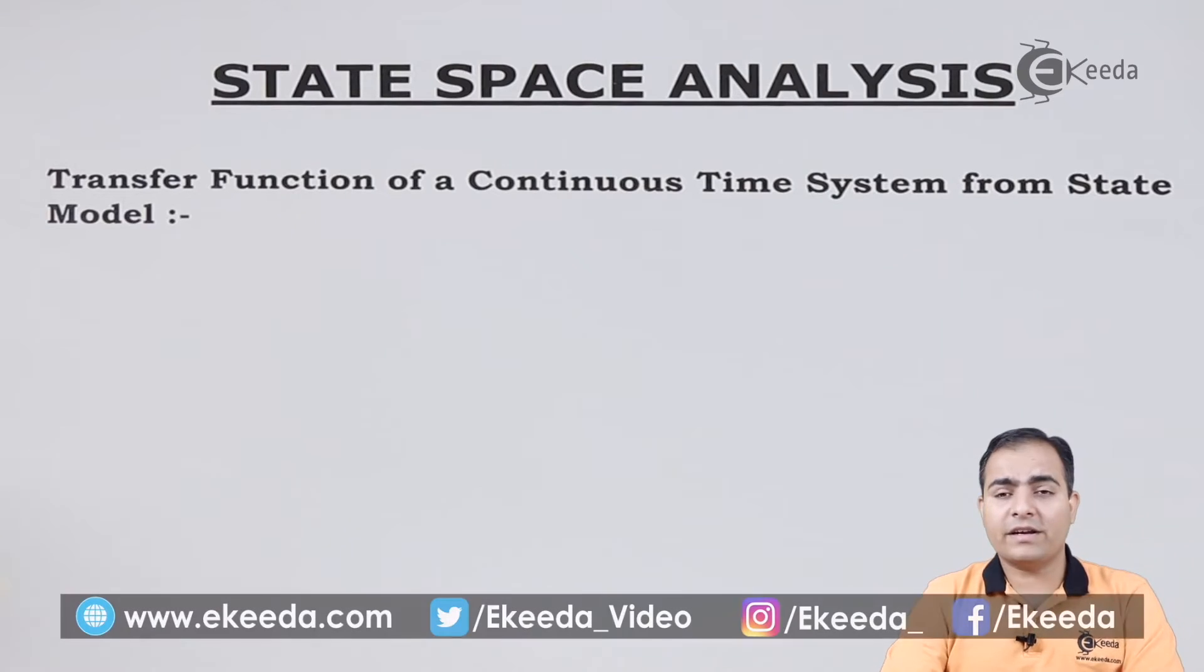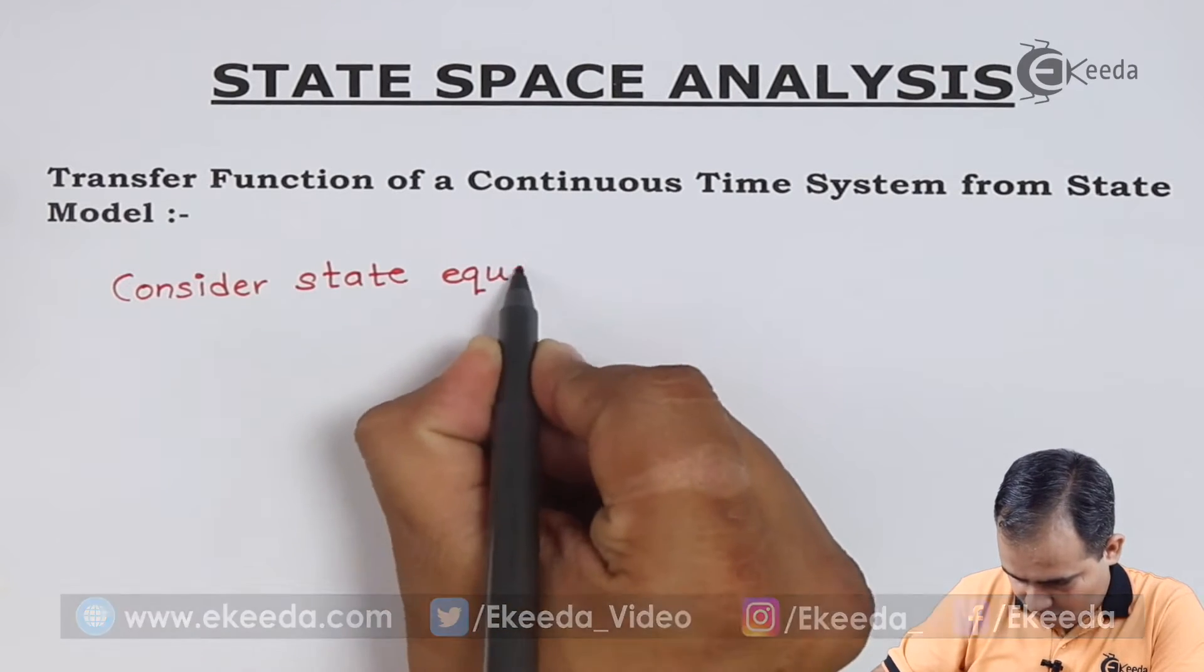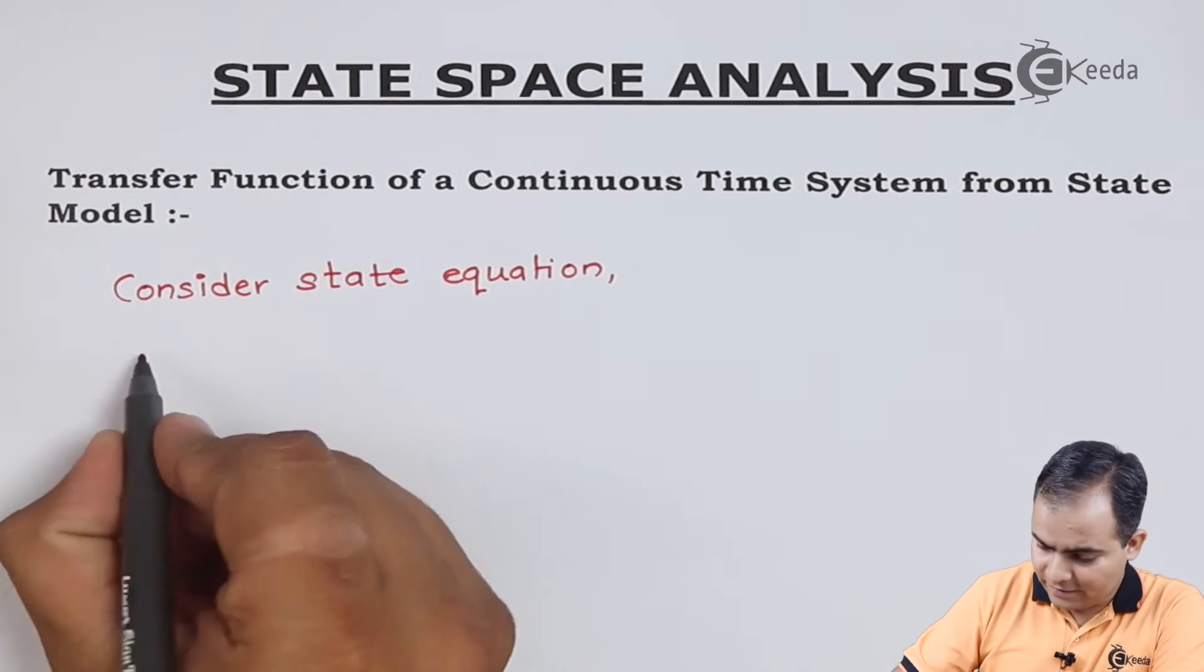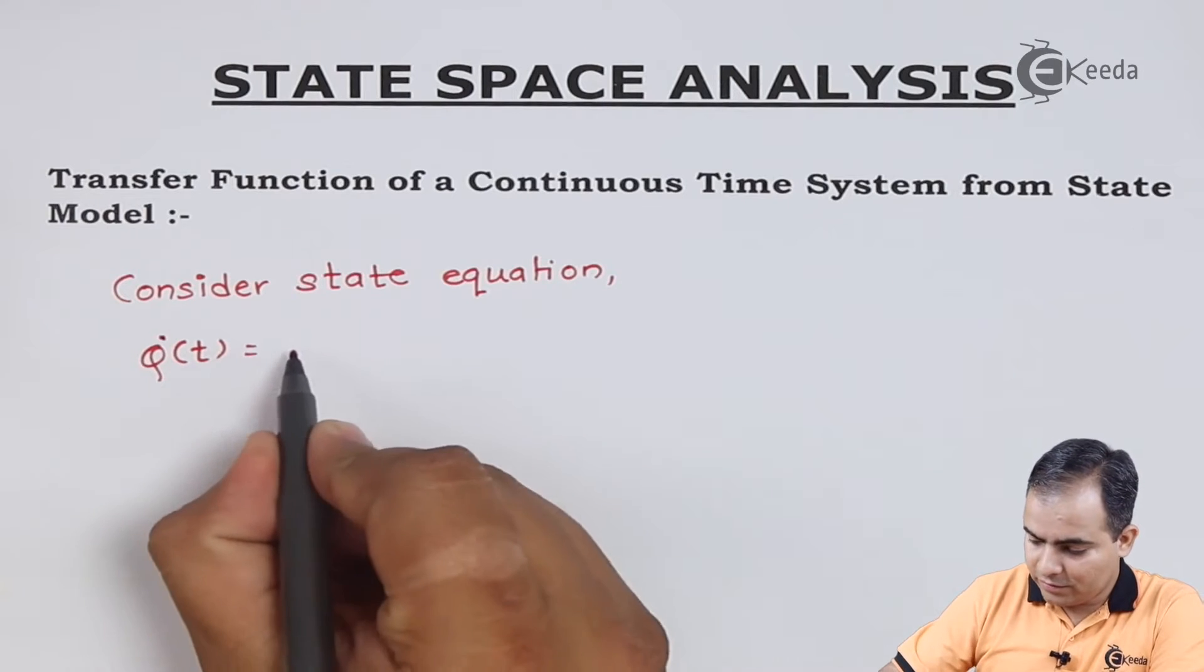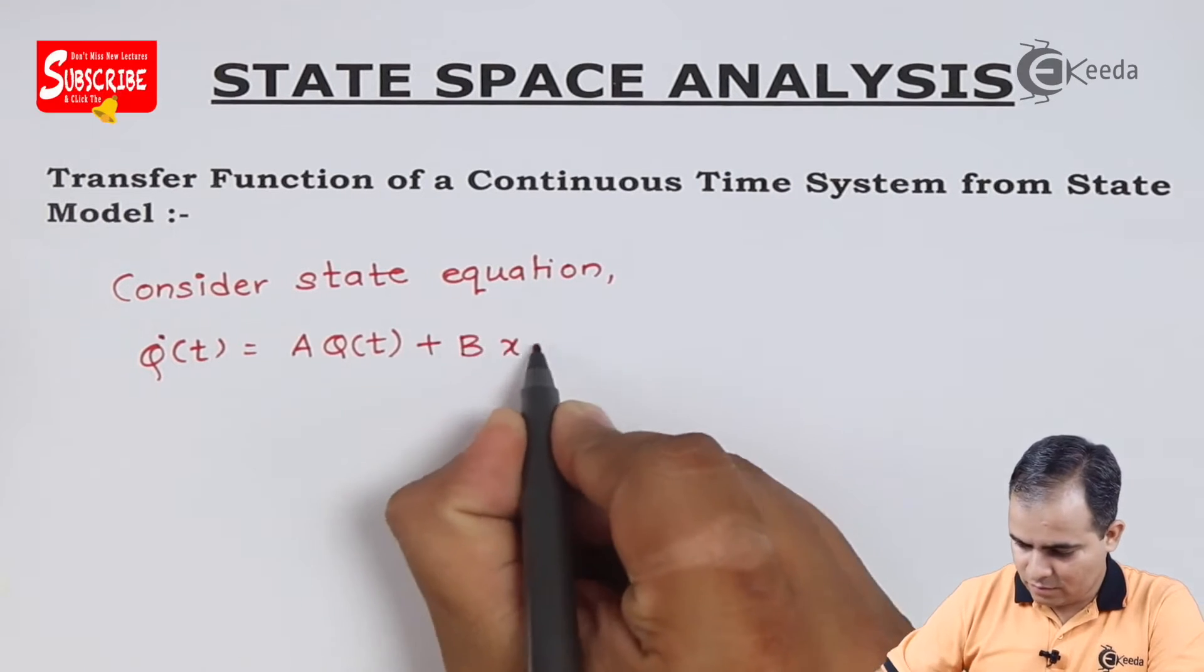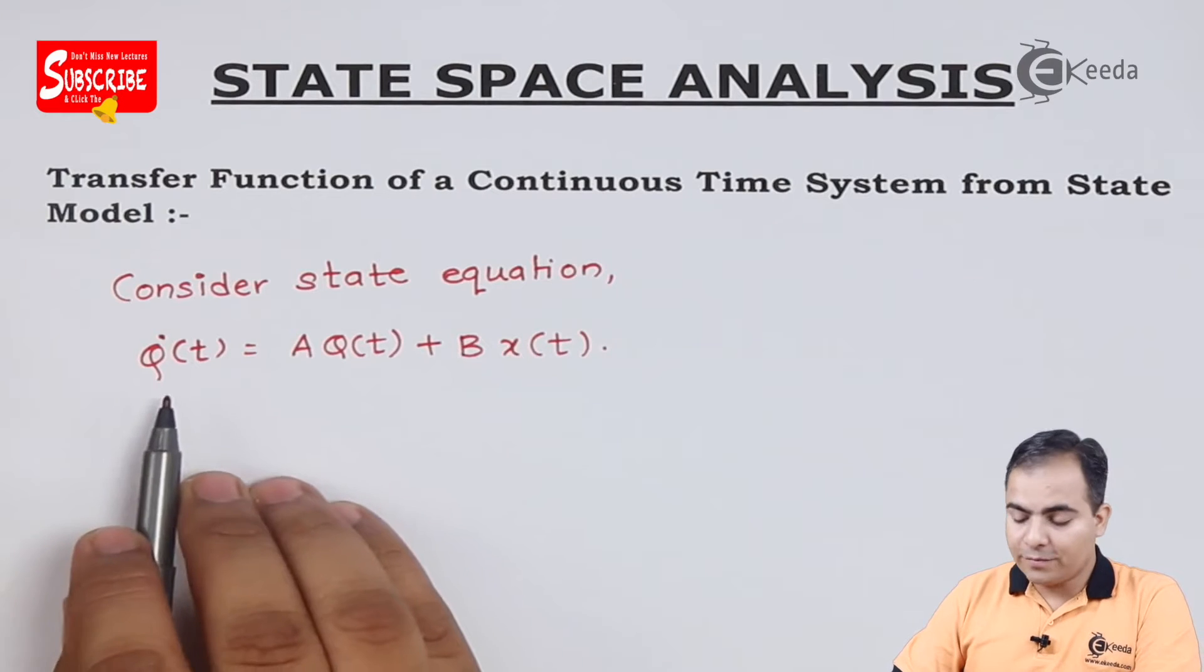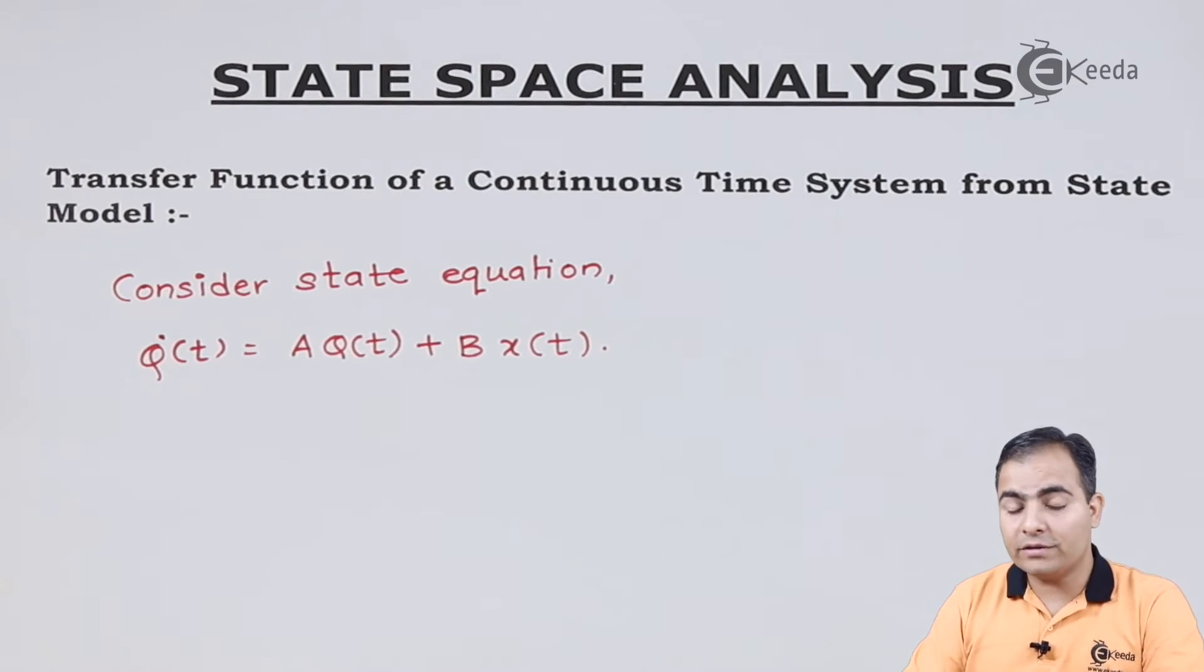So first of all we will write the definition of state equation. Now consider the state equation, q' is equal to... I am going to obtain a Laplace transform on both the sides but I am going to assume all initial conditions are zero.